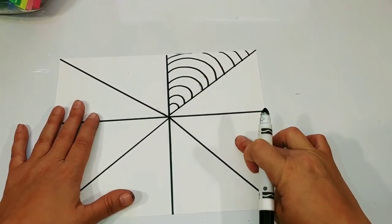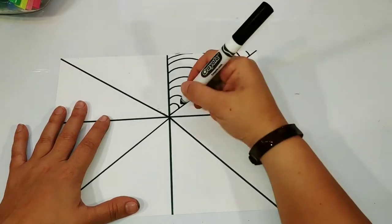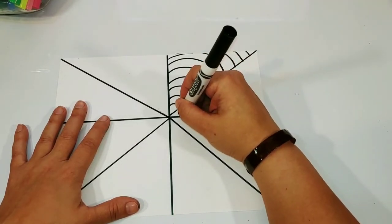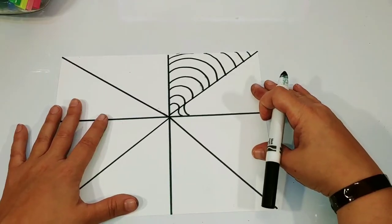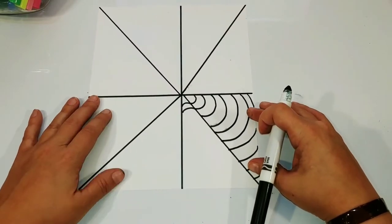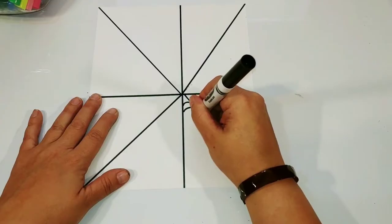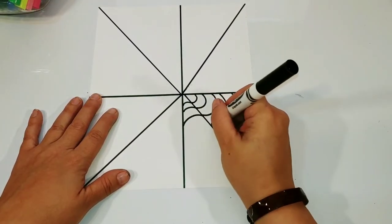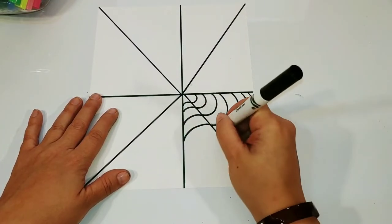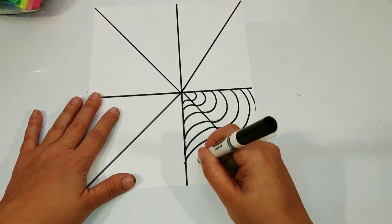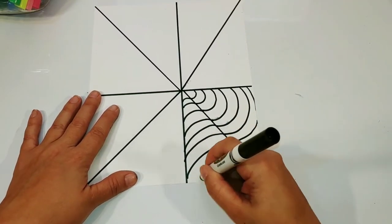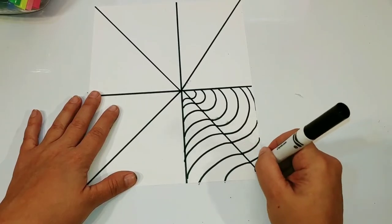Then we're going to move to the next section. We're not going to skip any sections and we're going to connect the lines with a reverse rainbow. So you see the first set went up, this one is going to go down. Now if you have trouble doing that, you can turn your paper like I did.